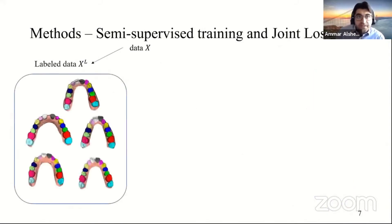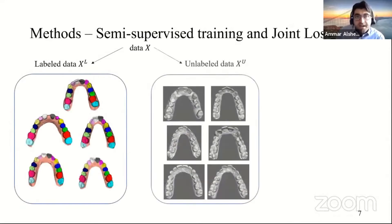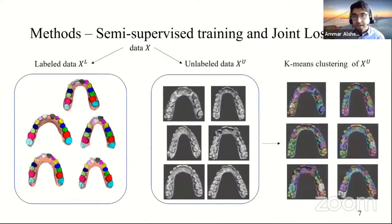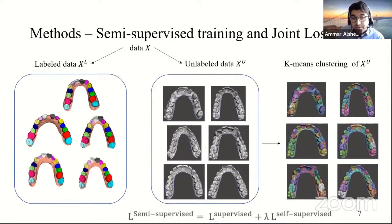Let's imagine that we have a dataset X and this can be divided into labeled data and unlabeled data. And let's suppose that we can create some k-means clustering of this unlabeled data using some unsupervised technique. Then we can learn some loss on the features of this clustered data such that we can compute a total loss that we can call semi-supervised loss, which could be composed of a loss coming from the supervised training of labeled data and the self-supervised training of clustered unlabeled data. Here, lambda is a relative parameter that controls the relative strength of the two losses with respect to each other.